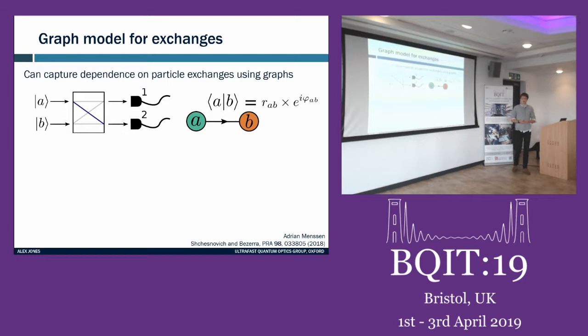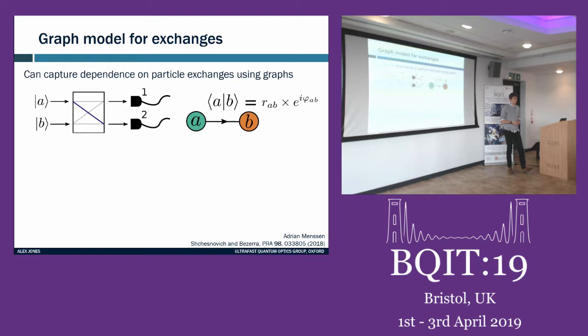We want a nice way of capturing how these exchanges show up in interference statistics. There's a toy model borrowing from graph theory, developed by a colleague Adrian Mensen and some theorists. The vertices are the interfering states with a directed edge between them, weighted by the overlap of the interfering states in modulus-argument form. To find the contribution to interference, you need to make a closed loop on one of these graphs.